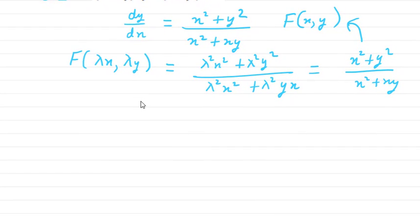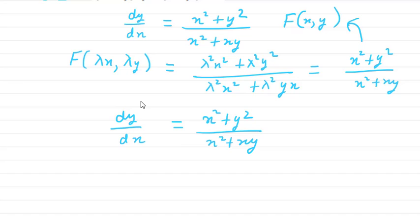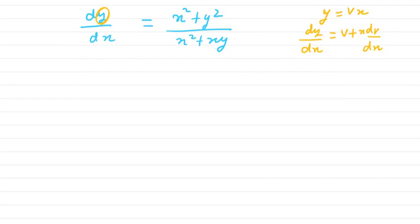Now we'll solve the equation. We have dy/dx equals x² + y² divided by x² + xy. Since there are two terms in both numerator and denominator, we can take either y = vx or x = vy. Here I'm taking y = vx, so dy/dx equals v + x·dv/dx.